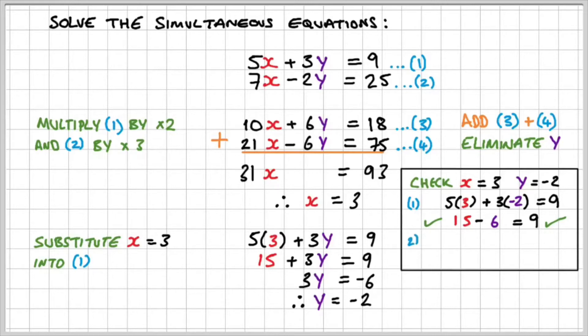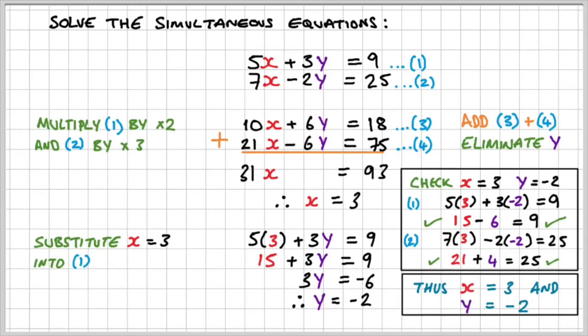For equation 2 then, 7 times 3 minus 2 times negative 2 is equal to 25. Since 21 plus 4 does equal to 25, I know that that's balanced. So therefore, I can say x is equal to 3 and y is equal to negative 2 for these two simultaneous equations.